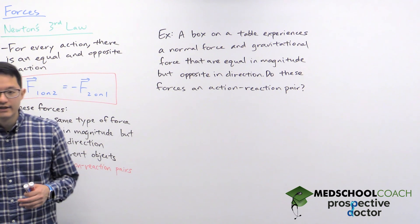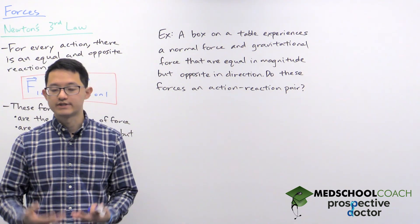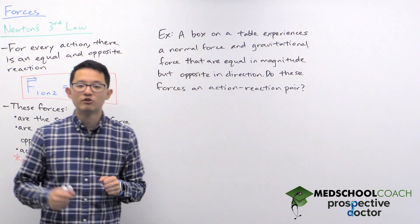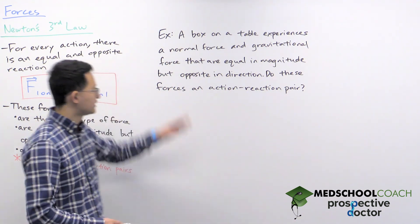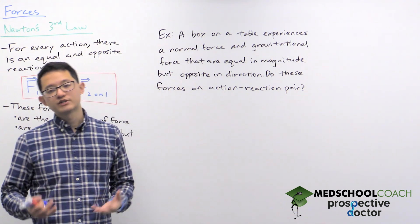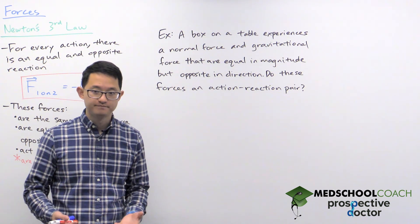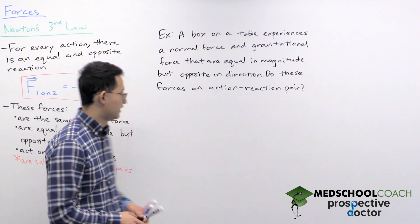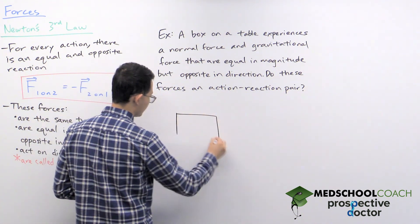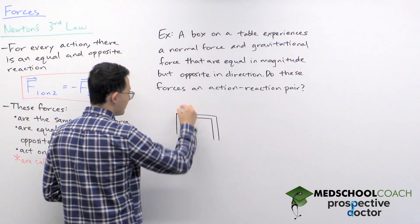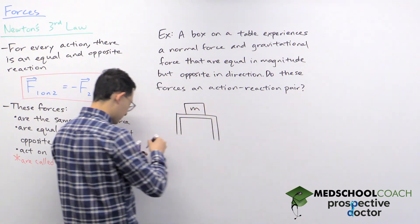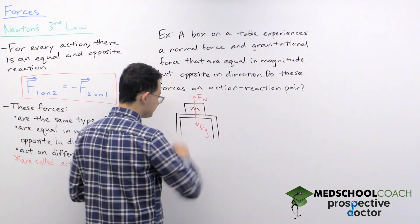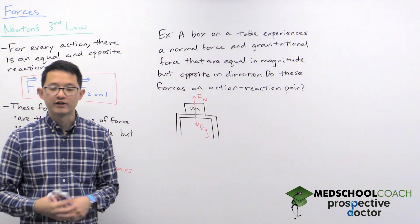Now let's take a look at an example. We have a situation where a box on a table experiences a normal force and a gravitational force. These forces are equal in magnitude but opposite in direction. Drawing out the situation: we have a table with a mass sitting on top. There is a normal force pointing upward and a force of gravity pointing downward. The question is: do these form an action-reaction pair?